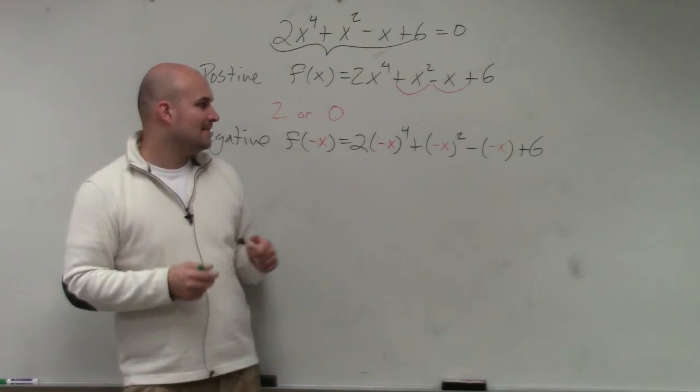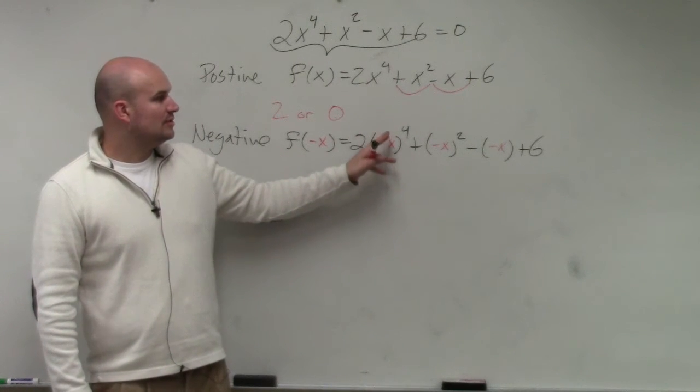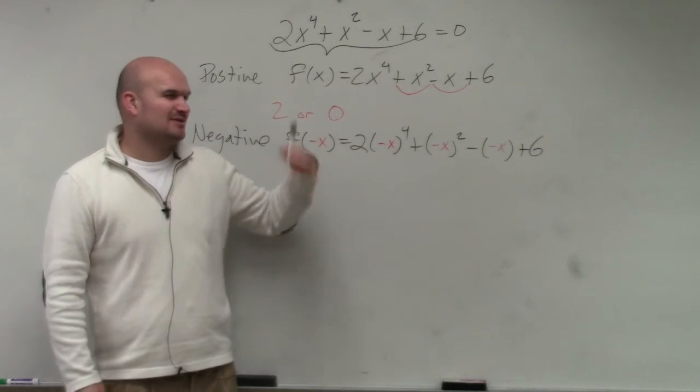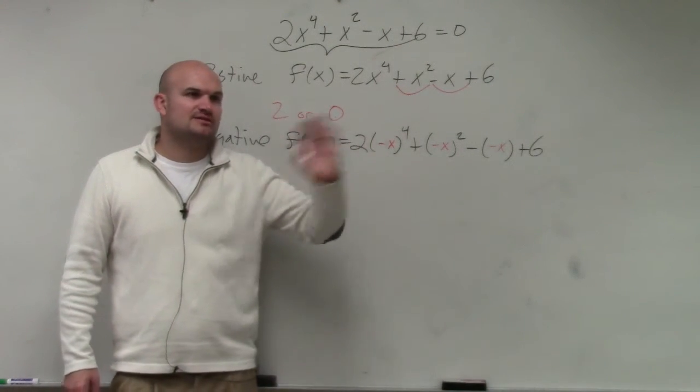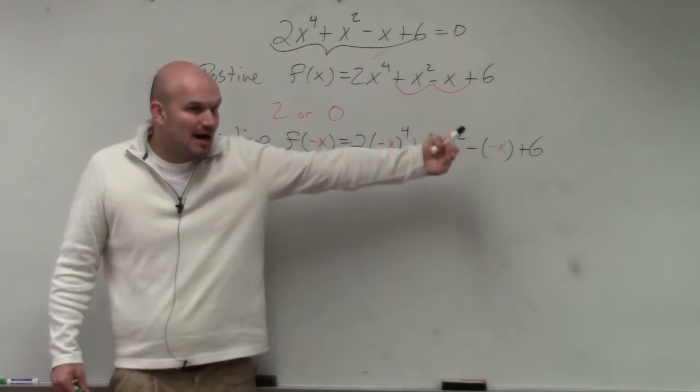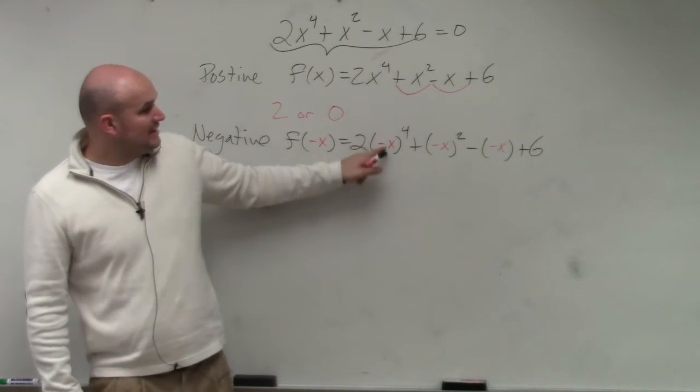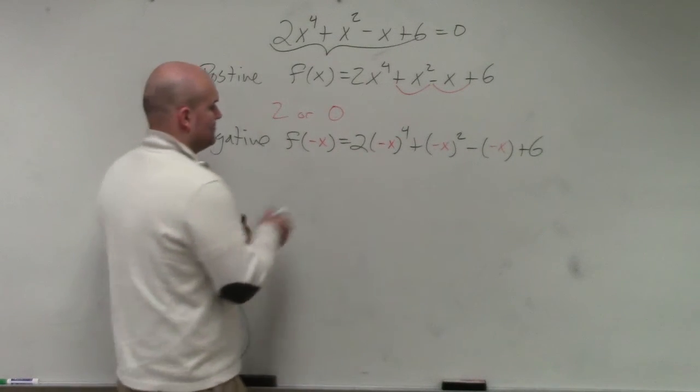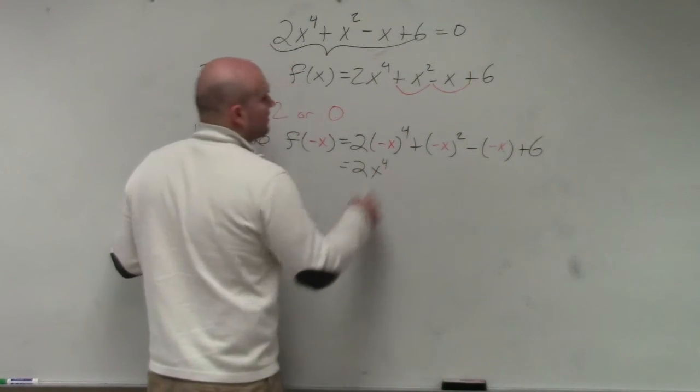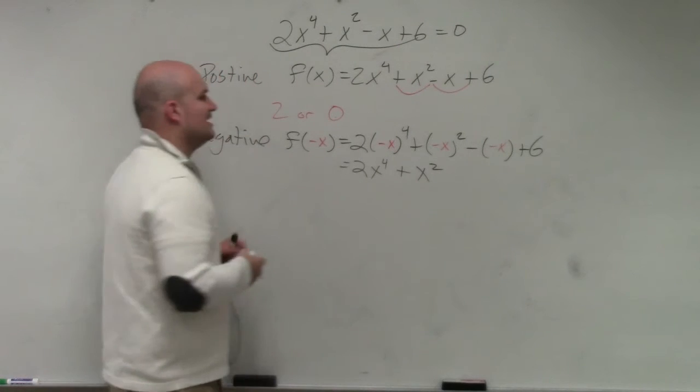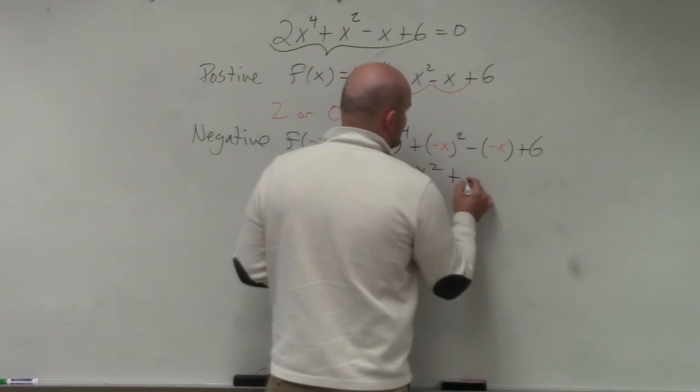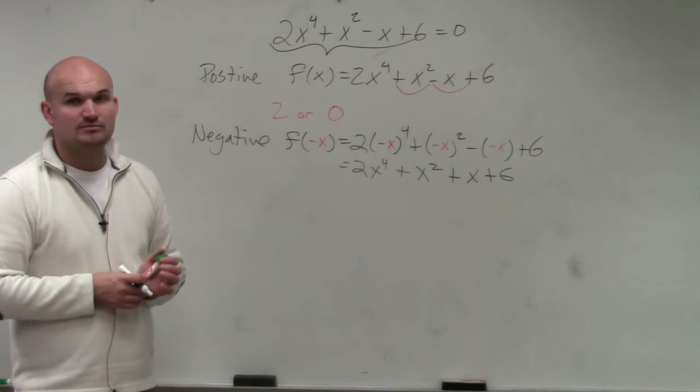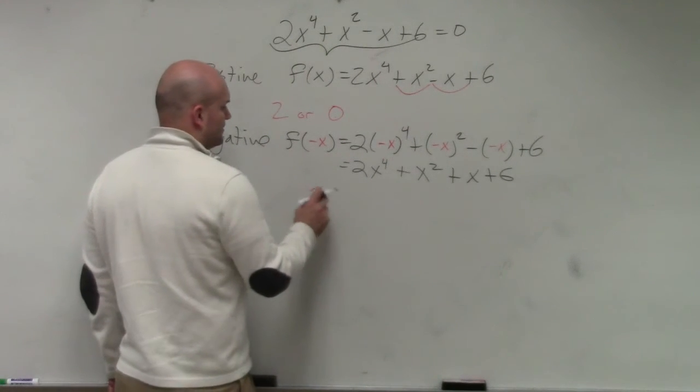So what I was just about to say is any negative value raised to an even power is positive. I don't want to say flip sign, because then you think... always do the opposite. Any negative number raised to an odd power is always negative. So negative x to the fourth is going to be positive x to the fourth. Positive x to the fourth times 2 is just positive 2x to the fourth. Negative x squared is now going to become a positive x squared. Negative negative x is now a positive x plus 6. Right? So how many real zero solutions do we have? Zero. Zero, right? Zero.